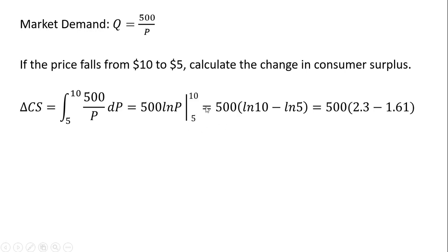So now evaluating over this range from $5 to $10, it's going to equal 500 times the natural log of 10 minus the natural log of 5. And the natural log of 10 is approximately 2.3. The natural log of 5 is approximately 1.61. So doing the math here, our change in consumer surplus will be roughly $345.